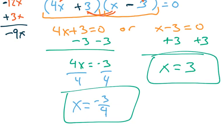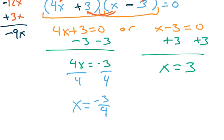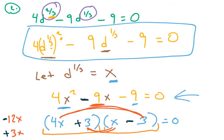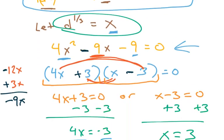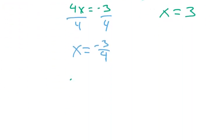So the final result is x equals negative 3 fourths and x equals 3, except I made a silly mistake. And this is the very common silly mistake that occurs because the question is not asking me to solve for x. The question is asking me to solve for d. So I have to recall that d to the 1 third is x. So we actually have d to the 1 third is equal to negative 3 fourths, and d to the 1 third is equal to 3.